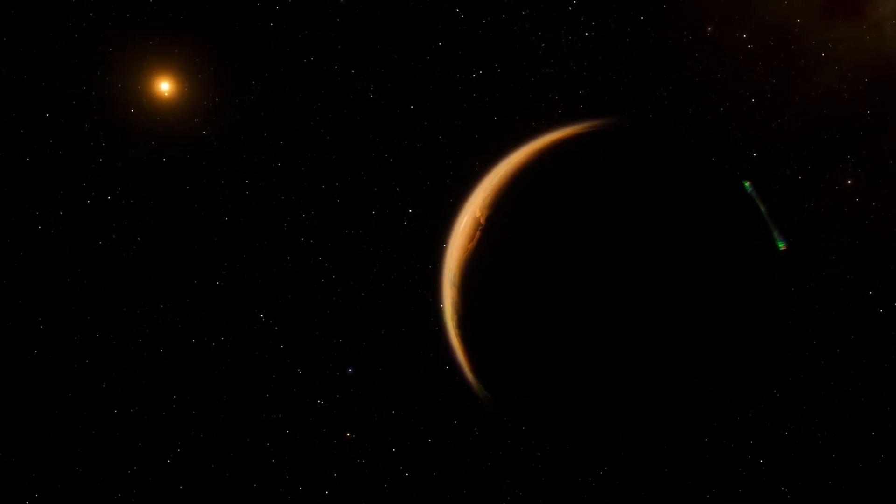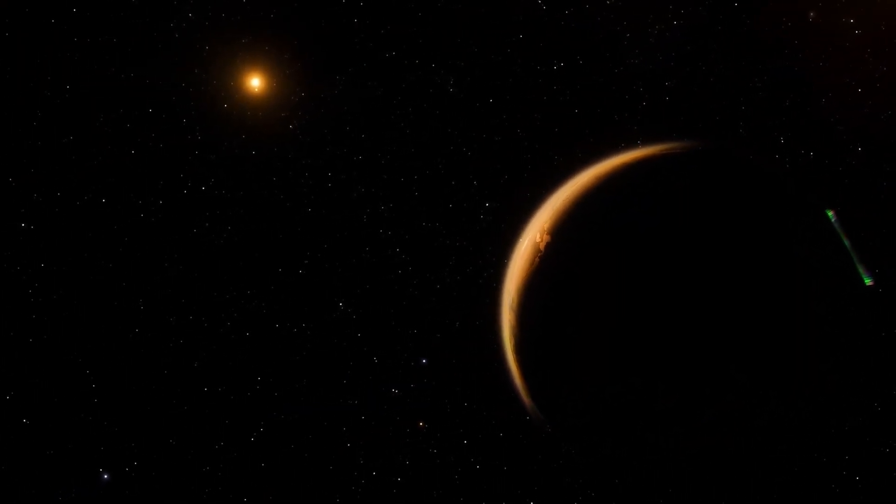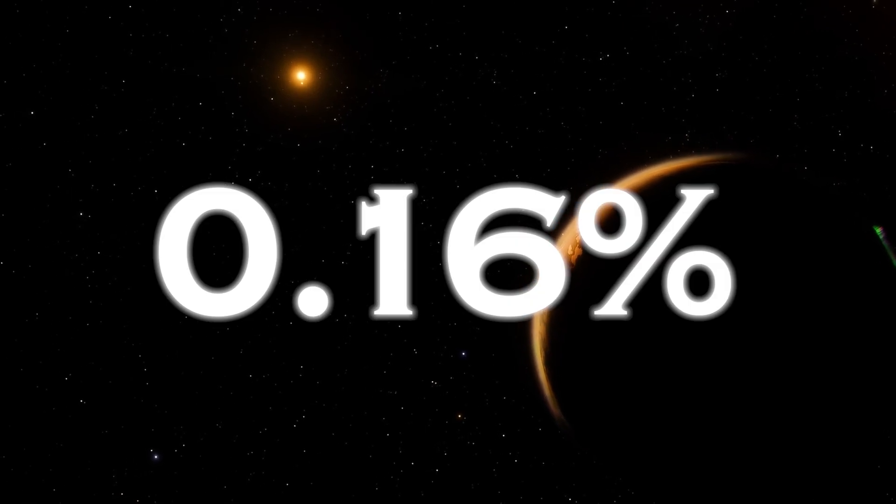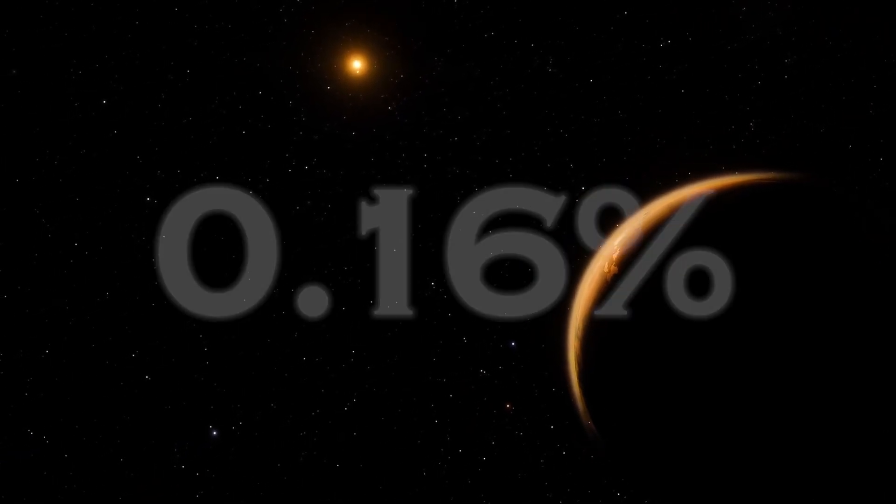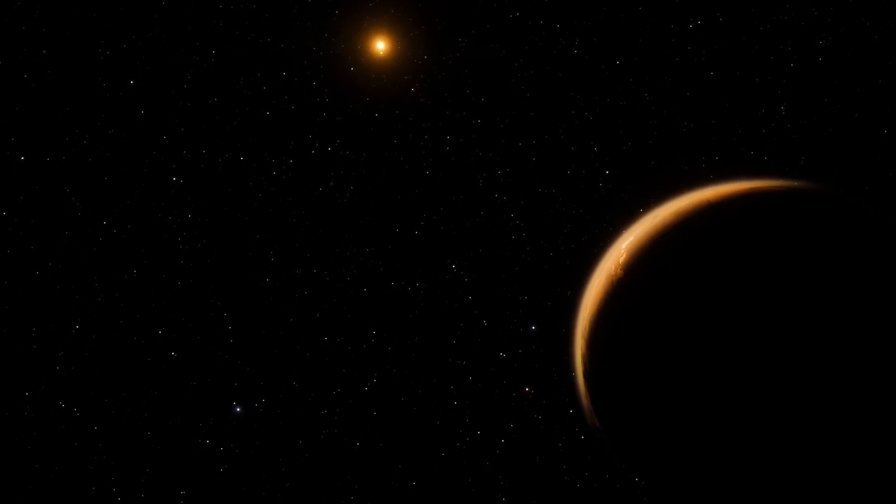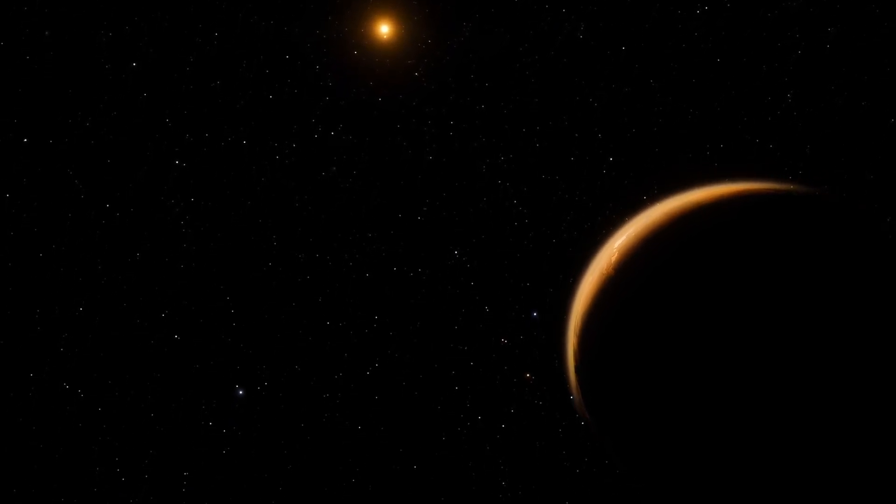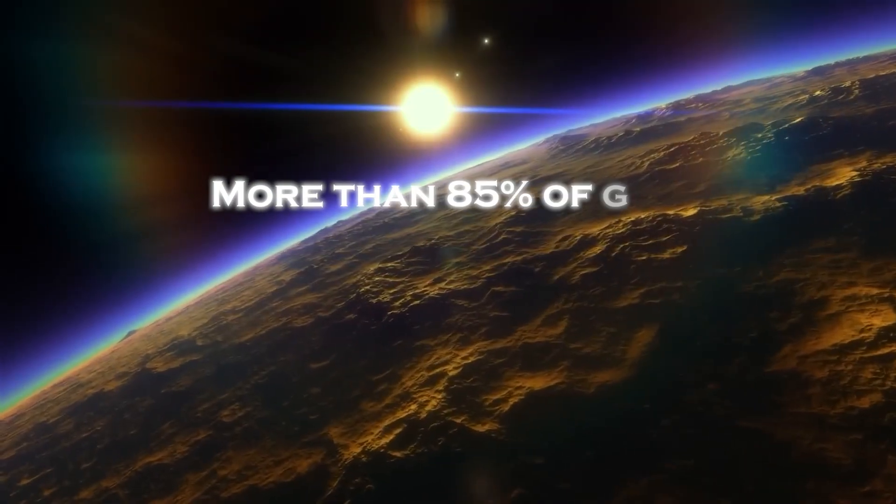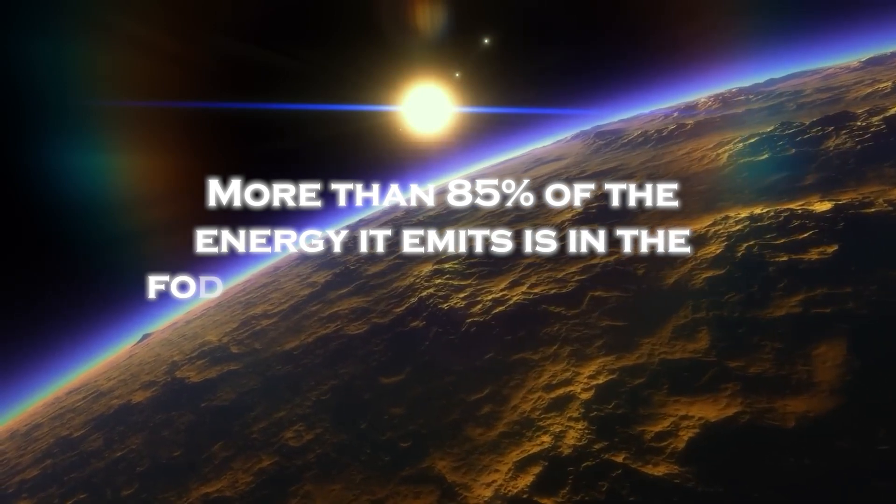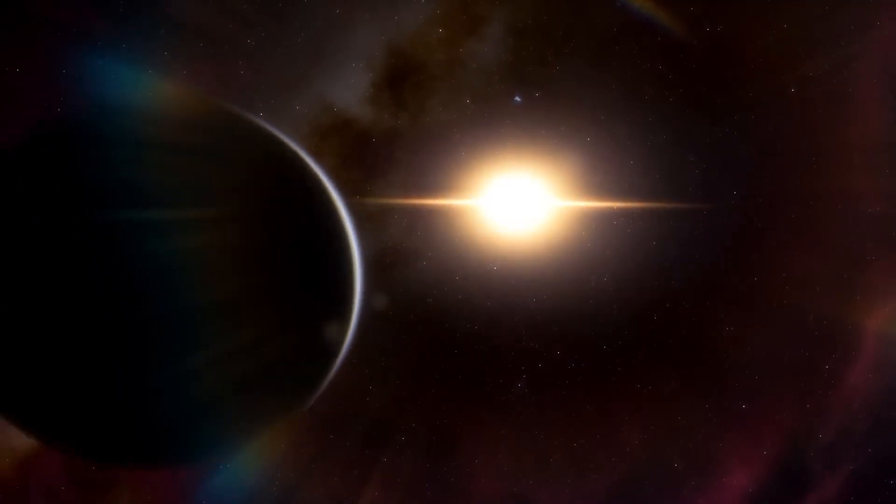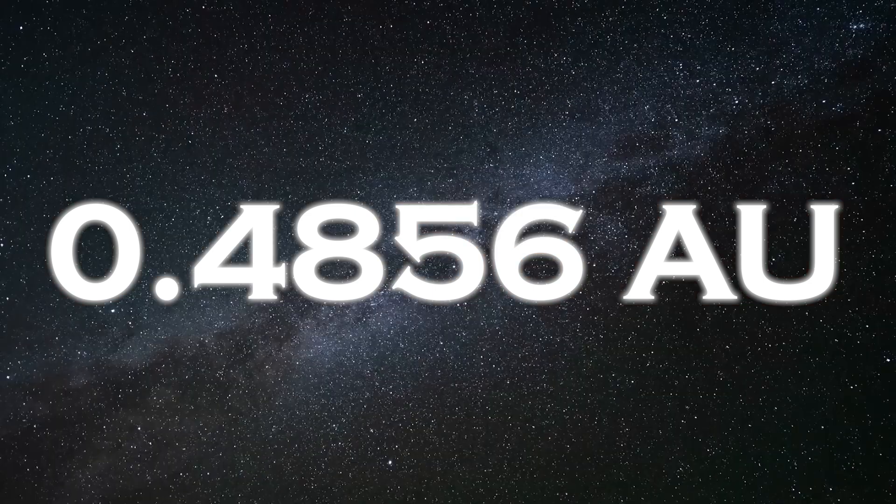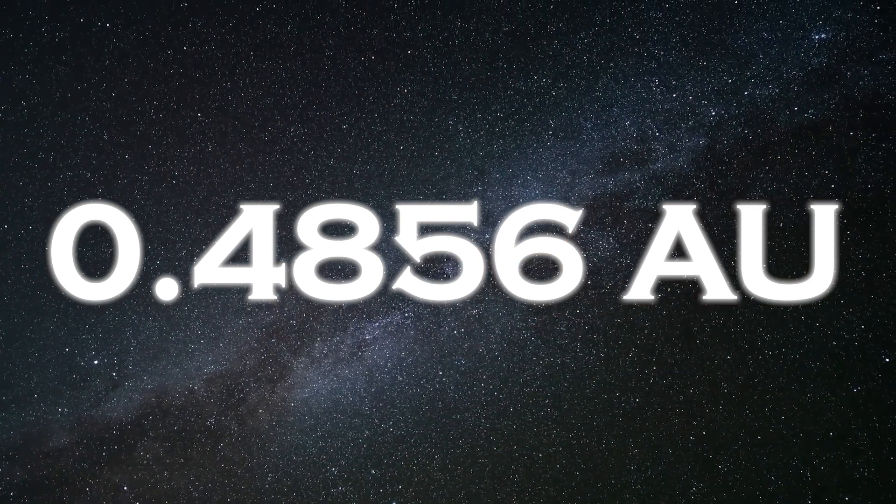The star's luminosity is surprisingly low across the electromagnetic spectrum, at only 0.16% of the sun's luminosity. Moreover, in the visible spectrum, its luminosity appears even dimmer, emitting only about 0.056% of the sun's luminosity. More than 85% of the energy it emits is in the form of infrared radiation, and it orbits at a distance of about 0.4856 astronomical units from its star.